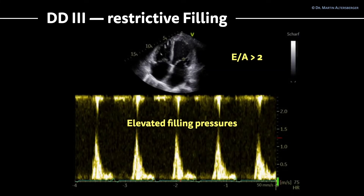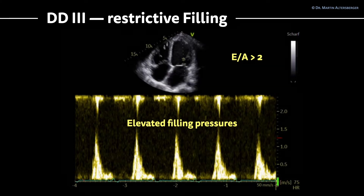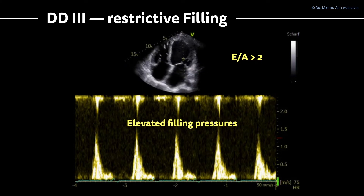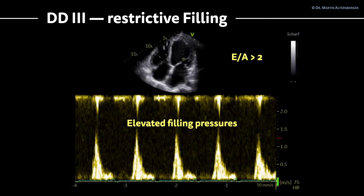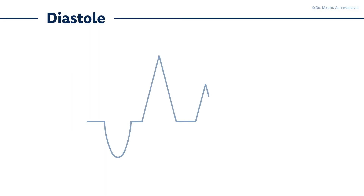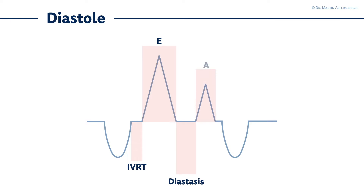In a patient case here, you have a case of a patient with restrictive filling. In case of restrictive filling, the heart or the left ventricle is very stiff and the filling pressures are definitely elevated. The E to A ratio is definitely above 2, which equals elevated filling pressures. On the Pulse Wave Doppler, the E wave is way larger than the A wave, and if the ratio is at or above 2, we have Diastolic Dysfunction Grade 3 restrictive filling.